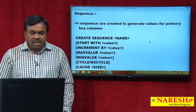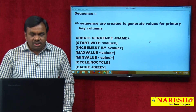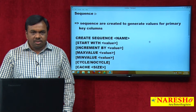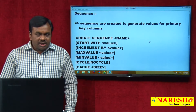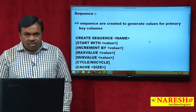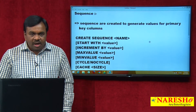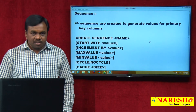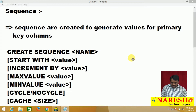So how do we generate these values for primary key columns? That can be done — that is implemented with the help of a sequence object. We will see how to create a sequence in Oracle and how to use that sequence to generate values for a primary key column.